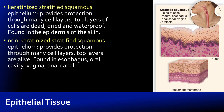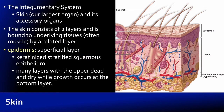Hello, welcome to part two of our lecture on chapter four. At the end of part one we recognized there are two forms of stratified squamous epithelium: a non-keratinized form and a keratinized form. We're going to pick up here with the keratinized form, which is part of our skin or what we might call our integumentary system.